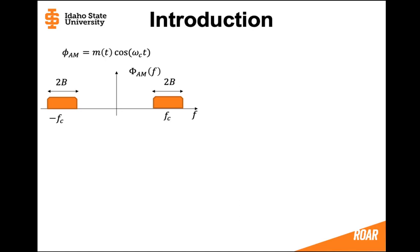That message had some bandwidth, and that bandwidth was 2B on that negative fc and positive fc. That bandwidth takes up some room and we know that bandwidth is expensive and we don't want to waste bandwidth. So the idea that we should be thinking about is how could we reduce bandwidth?